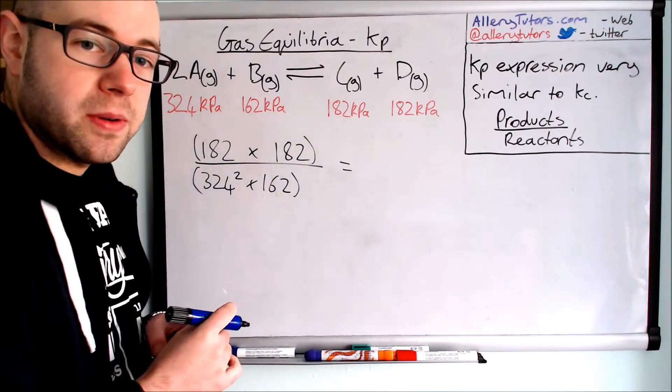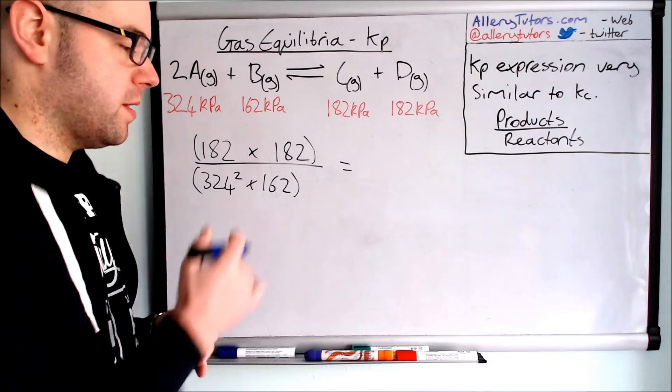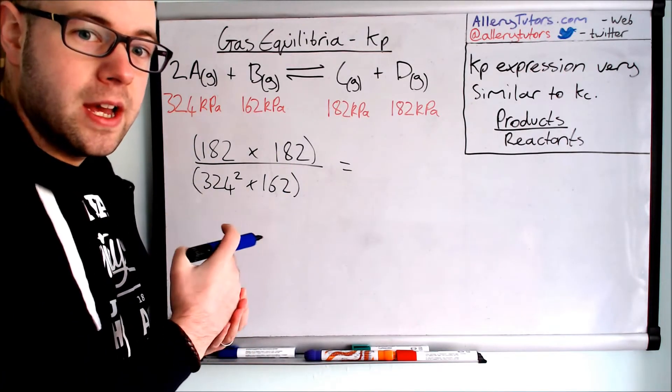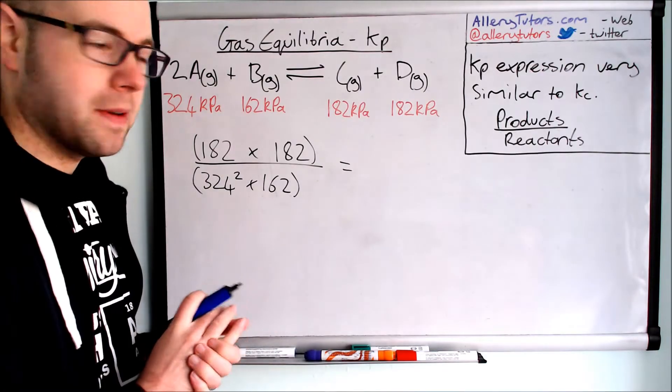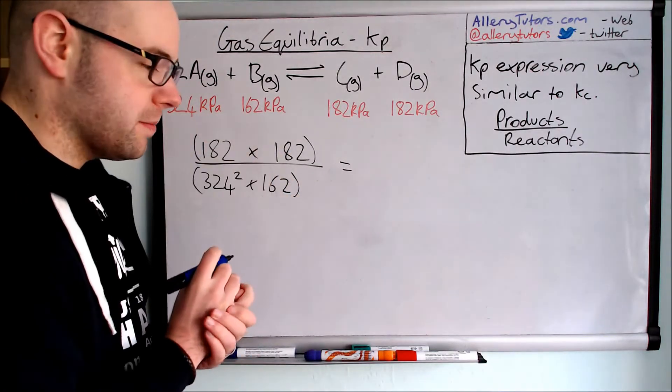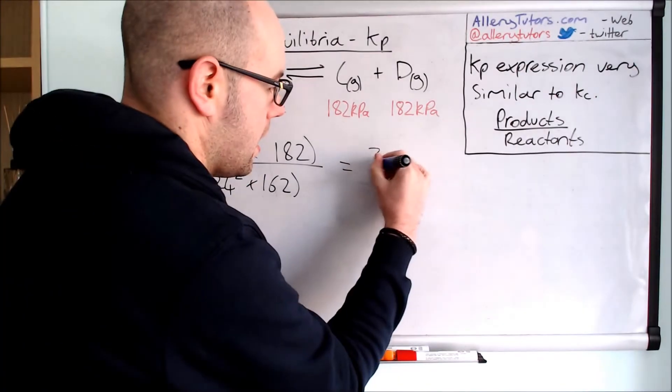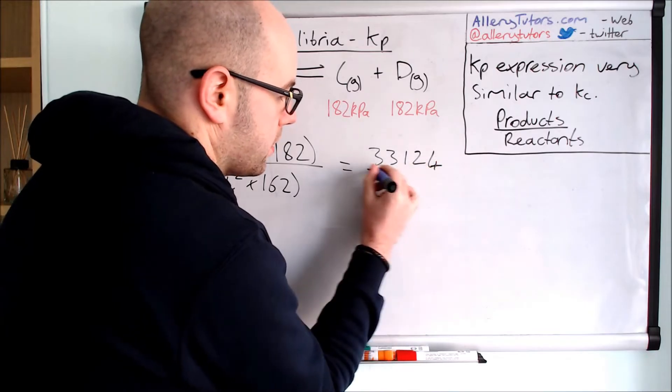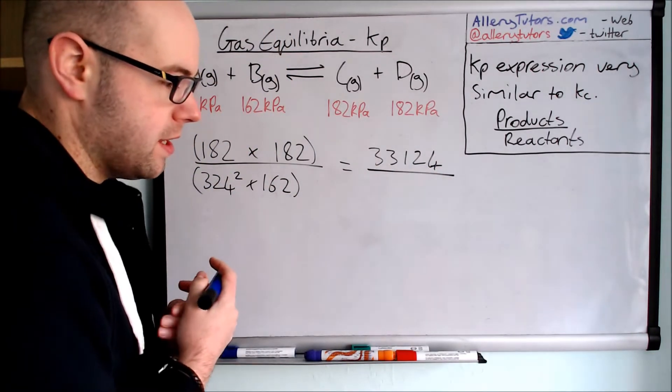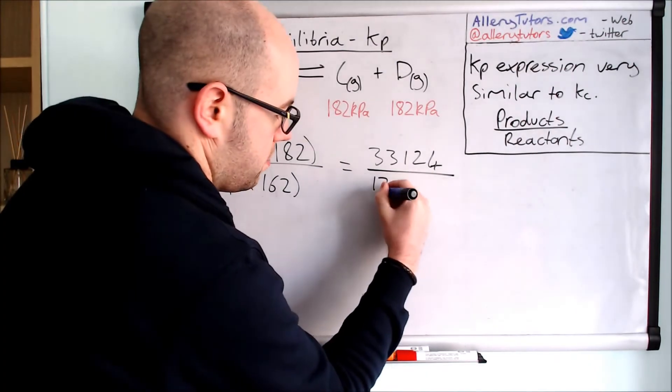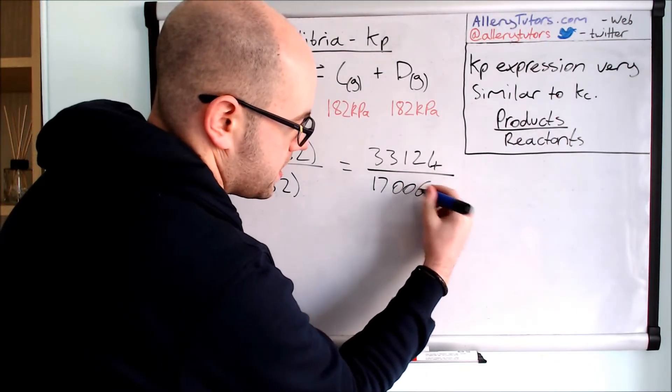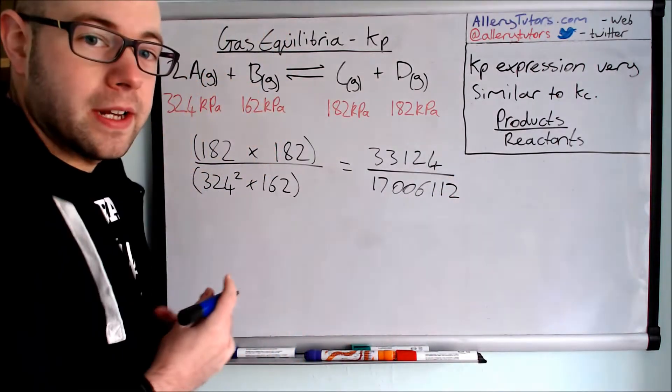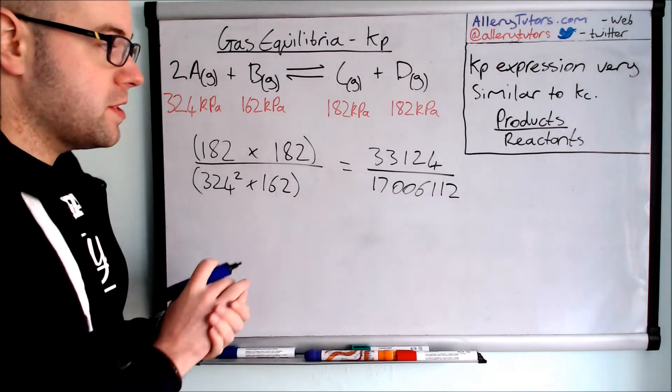So if we put them into our calculator, we can work out the top row and I recommend that you do this as you work out the lines separately because sometimes you put them all in the calculator and the number can come out incorrectly. So we're going to put in the top number first and that should get you this number 33124 and we're going to divide that by the total for this one here which should come out to be 17006112. If you put that in your calculator then you should see if that's correct.